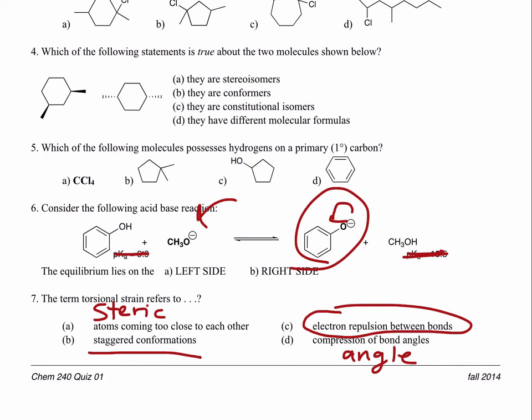Any questions about the quiz? For the test, you should know the basic parent names through the first ten. For naming, you should know methane, propane, butane — through decane. For special substituent names like isobutyl and sec-butyl, I won't be asking those. I'll just be doing normal substituents like ethyl, propyl, and things like that. Don't worry about those common special names.